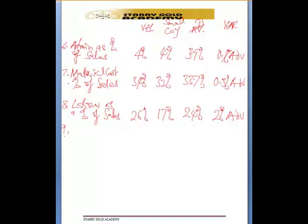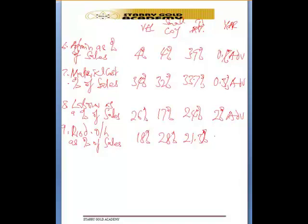And next you have production overhead as a percentage of sales. Here will be 18%, here will be 28%, here is 21%, giving us a difference of 3.3. But this time around, Valianz was able to achieve a lower cost, so making it favorable — 8.3% favorable.